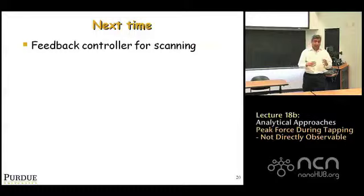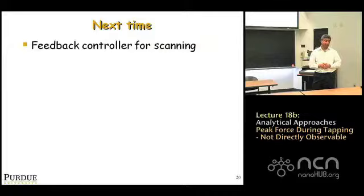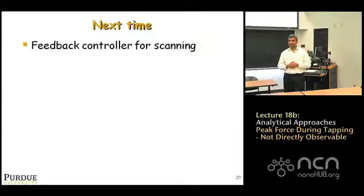With that, I'd like to end the class and note that we've concluded with what we can say analytically in tapping mode AFM — we've covered many key results. What we start talking about next time is the notion of feedback control during scanning in tapping mode: proportional-integral controls, how to choose them, and their effect on imaging stability. We've gone from surface physics to mechanics, and now we'll do some controls. You need to know all of this for AFM.